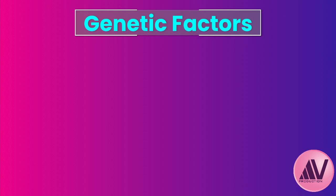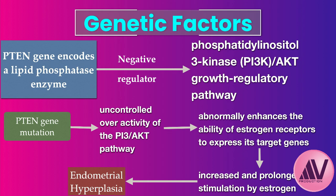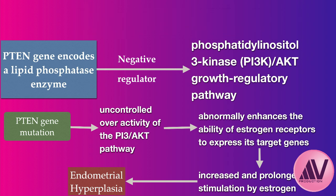Genetics may be involved in about 20% of cases. Lynch syndrome is mentioned specifically, along with the PTEN gene. Normally PTEN acts as a brake on cell growth, regulating the PI3K/AKT pathway. If there's a mutation in PTEN, that brake doesn't work properly, the PI3K/AKT pathway gets overactive, more estrogen receptors get expressed, and the endometrium becomes hyper-responsive to estrogen's growth signals.